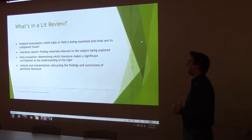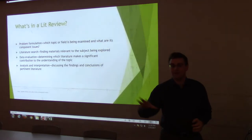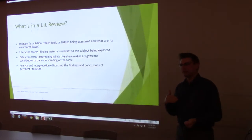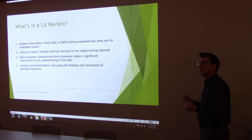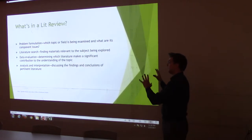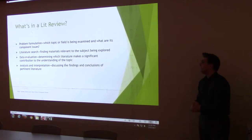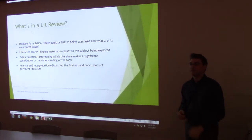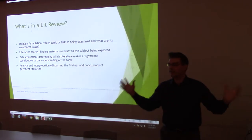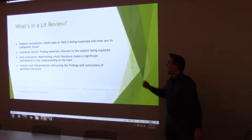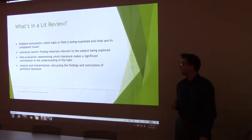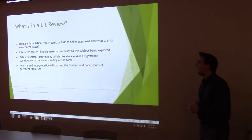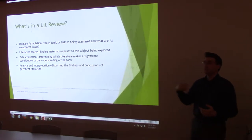So the question then is: what's in a lit review? What sorts of stuff do you include? Everyone should have a handout — an example as well as a template. Problem formulation is one of those things: which topic or field is being examined and what are its component issues? Every good literature review should say, this is what I am studying — this is the narrow scope of the research I'm looking at. It should have the literature search: finding materials relative to the subject being explored, anything that could possibly be relevant to the topic at hand.